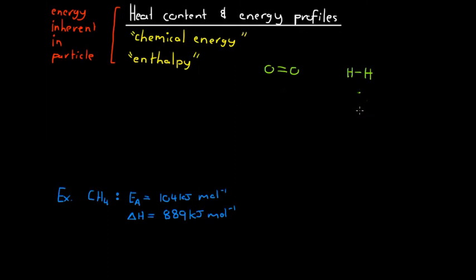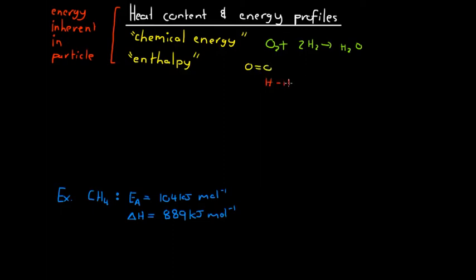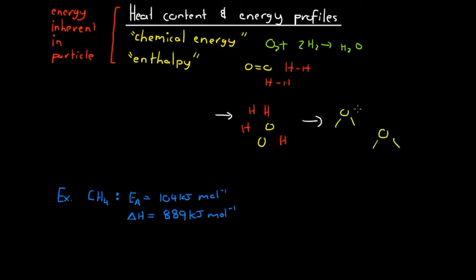When a reaction occurs, there is a two-stage process. In the example of oxygen and hydrogen reacting to produce water, we start with our oxygen molecule and two hydrogen molecules. The first step is that energy is absorbed and these bonds are broken, leaving all atoms unbonded. The next step is that energy is released and new bonds are formed, giving us two water molecules.